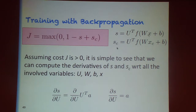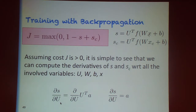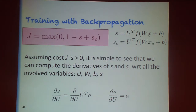Concretely, if we look at the derivative of the score with respect to our u vector — the ultimate scoring vector — that's a very simple derivative. The derivative with respect to u is just a, the current output of our model. So that's very easy to calculate.